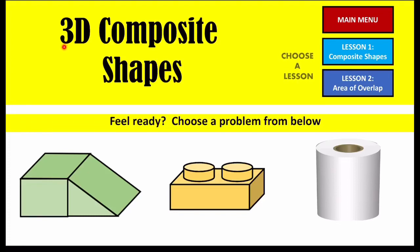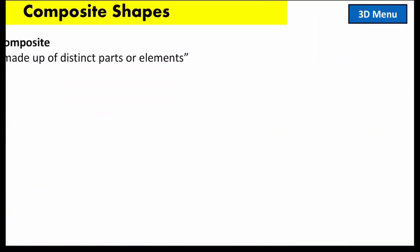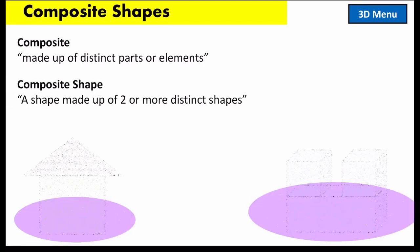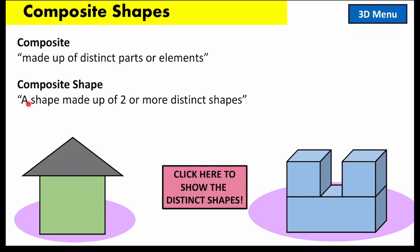Today we're going to take a look at an introduction to 3D composite shapes. Before this we solved basic 3D shapes like a rectangular prism, a triangular prism, and a cylinder. A composite shape — composite means made up of distinct parts or elements — is a shape made up of two or more distinct shapes.